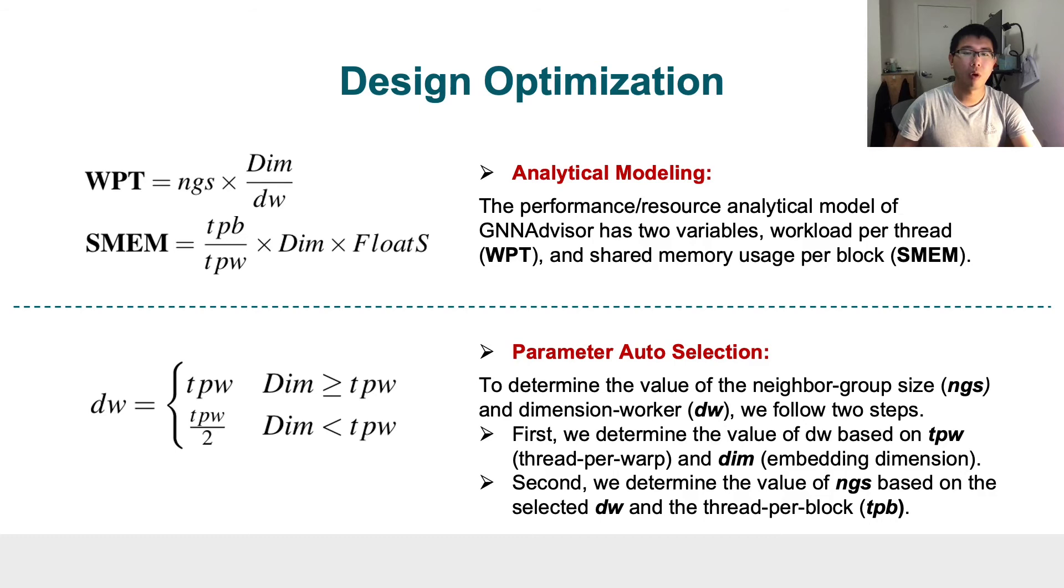For parameter auto-selection, we determine the value of the neighbor group size and the dimension worker size in two steps. The first step, we determine the value of the dimension worker based on the threads per warp and the embedding dimension. In the second step, we determine the value of the neighbor group size based on the selected dimension worker and the threads per block.